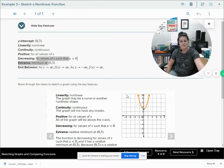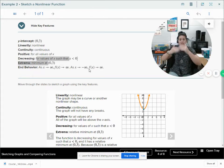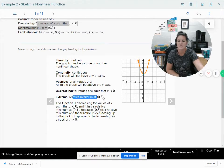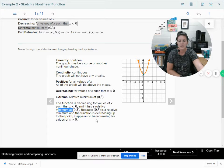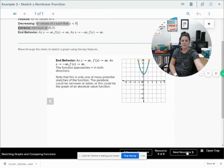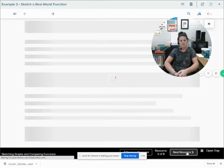So looking at this graph, it meets all the other criteria. It meets the end behavior as f of x, as x goes to positive infinity, and as x goes both to positive and negative, the end should be both going up towards positive infinity. And it looks like we have a relative minimum here at 0, 3 because the function is decreasing for values of x such that x is less than 0. And it has a relative minimum at 0, 3 because 0, 3 is a relative minimum and the function is decreasing to that point. It appears to be increasing for values of x greater than 0. So I hope that made sense. And then last of all, of course, looking at our end behavior, which we already talked about.